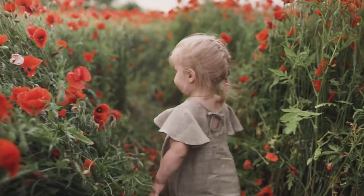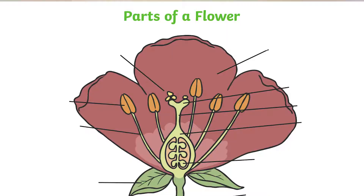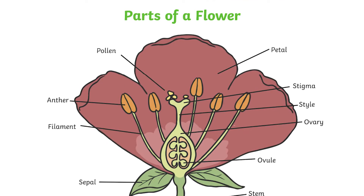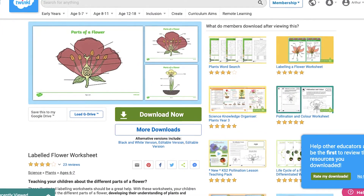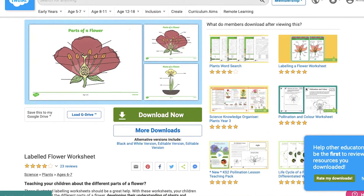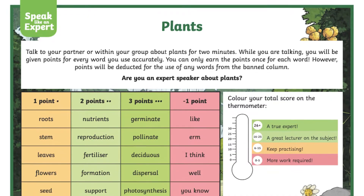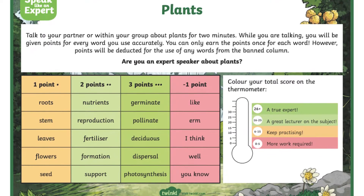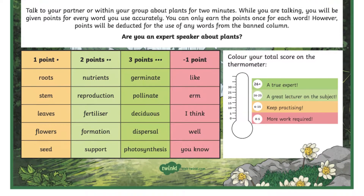Twinkl have a selection of resources which detail the various parts of a plant, such as this flower parts activity where children have to label the different parts of a flower. This plant vocabulary activity and these speak like an expert challenge cards can also help children work towards an independent piece of writing.